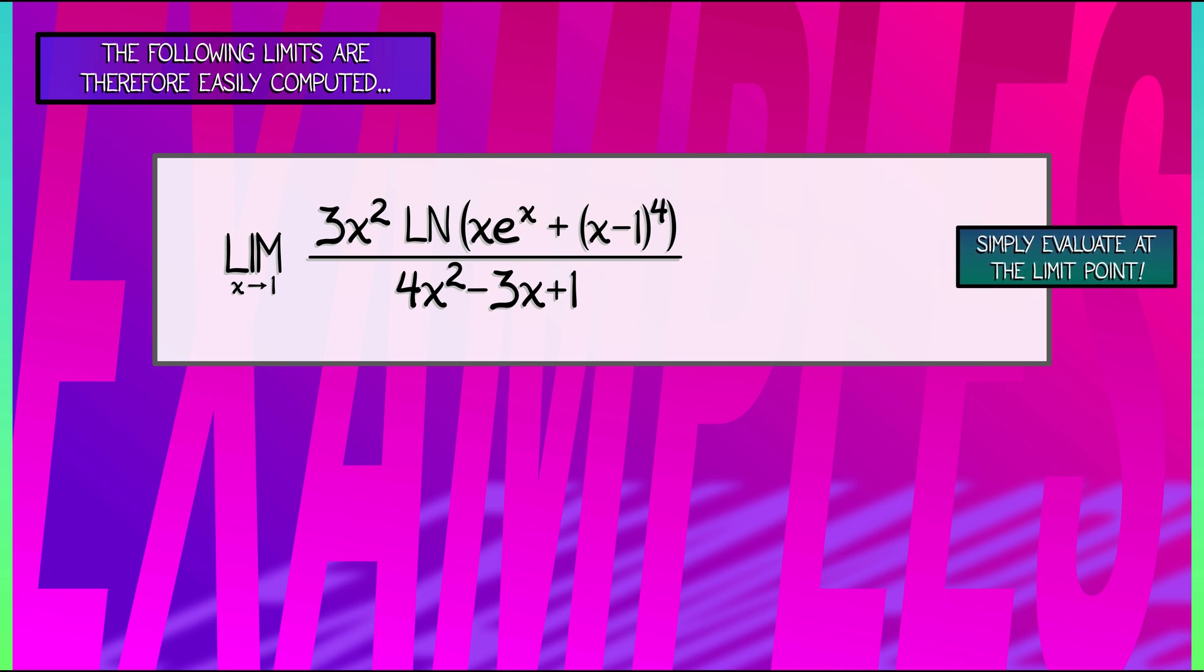Let's take a look at an example or two of how these rules make limits really easy to evaluate. Consider the limit as x approaches 1 of 3x squared times log of quantity xe to the x plus quantity x minus 1 to the 4th, all divided by 4x squared minus 3x plus 1. Is this going to be hard? No, it's not going to be hard. We can apply all of those limit laws and simply evaluate at the limit point. Let's see, if I plug in x equals 1, 3x squared, that's 3. Log of